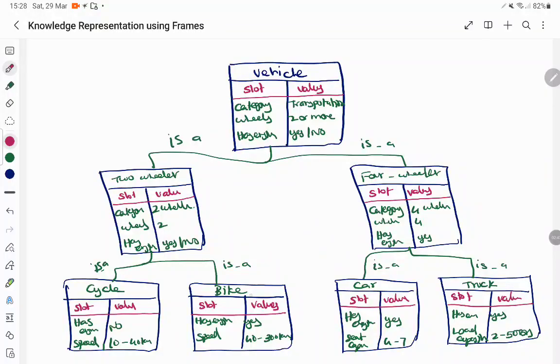For example, bike comes under the category of transportation - it is taking the property of vehicle. It has an engine and its own specific attributes like speed. Along with that, it will be inheriting the properties of the parental frames too.